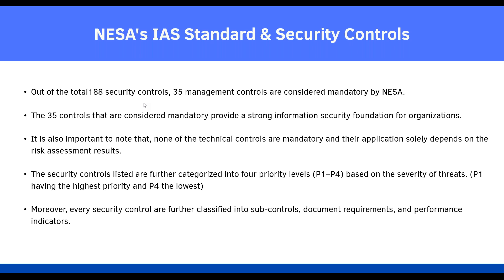On the question of data encryption at the database level: data encryption of all data that is important to the organization and that could be misused must be encrypted. Unlike PCI, NESA doesn't specify exactly what data - it depends on your risk assessment. If you are excluding some data from encryption, you must have a documented reason. For example: 'I excluded columns 1, 5, and 7 because of reasons X, Y, Z.' That documented justification is essential.